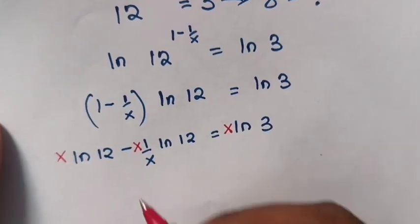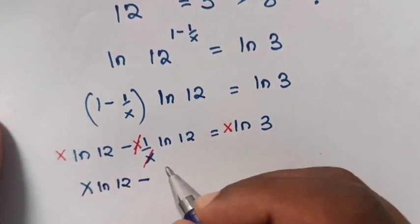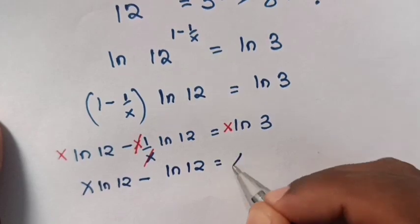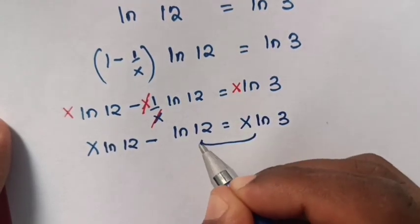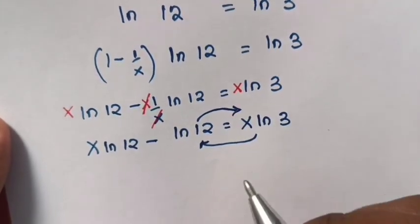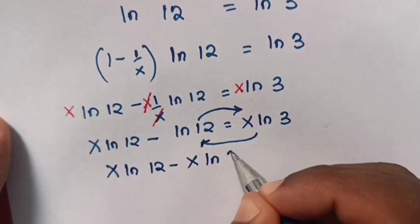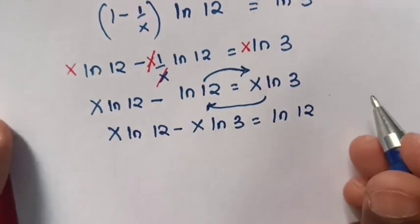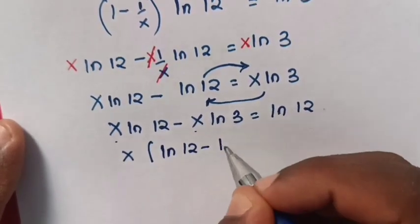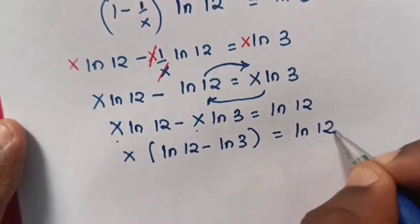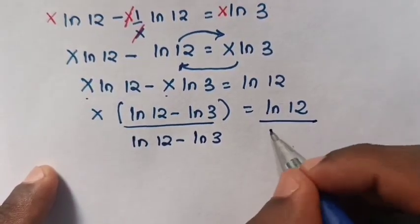The x cancels on the left fraction, so our equation becomes x·ln 12 minus ln 12 equals x·ln 3. Now x is common on the left, so we factor: x times (ln 12 minus ln 3) equals ln 12. Then we divide both sides by (ln 12 minus ln 3).